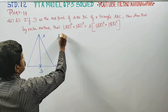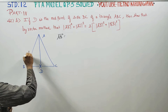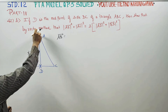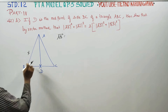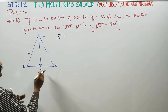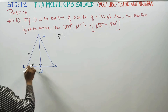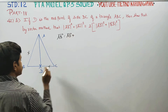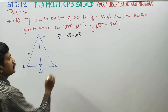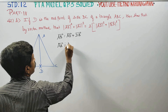AB vector is equal to AD vector plus DB vector. So AB vector is equal to AD vector plus DB vector.